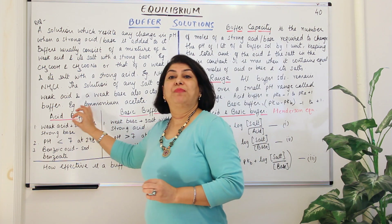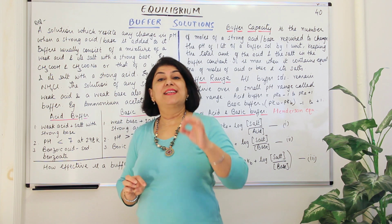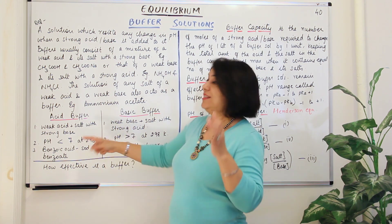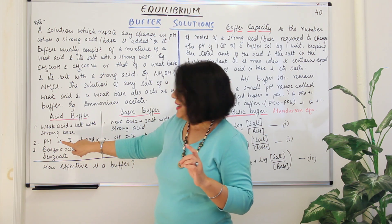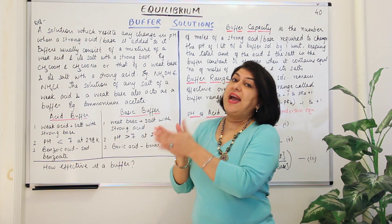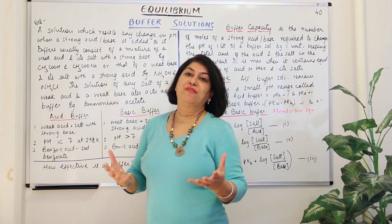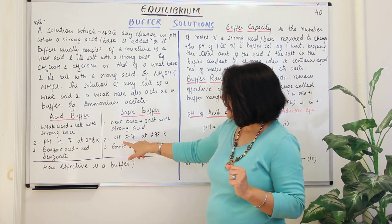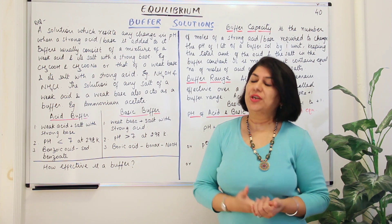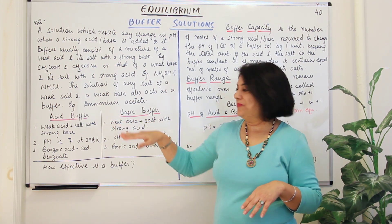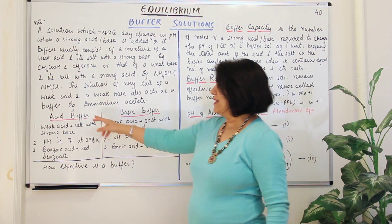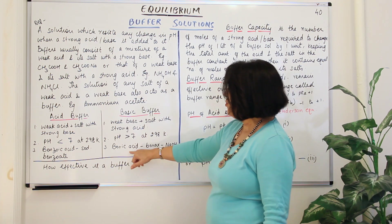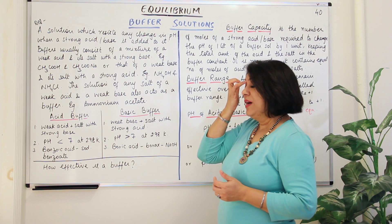An acid buffer is acidic in nature, meaning its pH is less than 7 at 298 K, and it acts as a buffer at that pH. A basic buffer is basic in nature, so its pH is higher than 7 at 298 K. Examples of acid buffers include benzoic acid and sodium benzoate; examples of basic buffers include boric acid, borax, and sodium hydroxide.